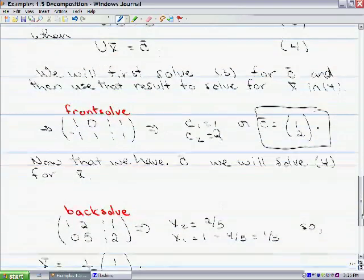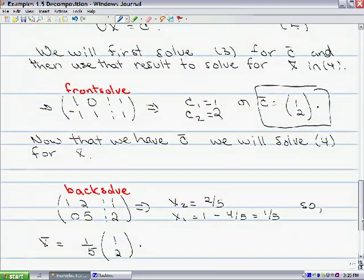Now we'll use that vector C to solve for X in equation 4. And notice that in this case we're going to back solve. So we're going to solve the upper triangular system, 1, 2, 0, 5, with the right hand side, 1, 2, which is C.